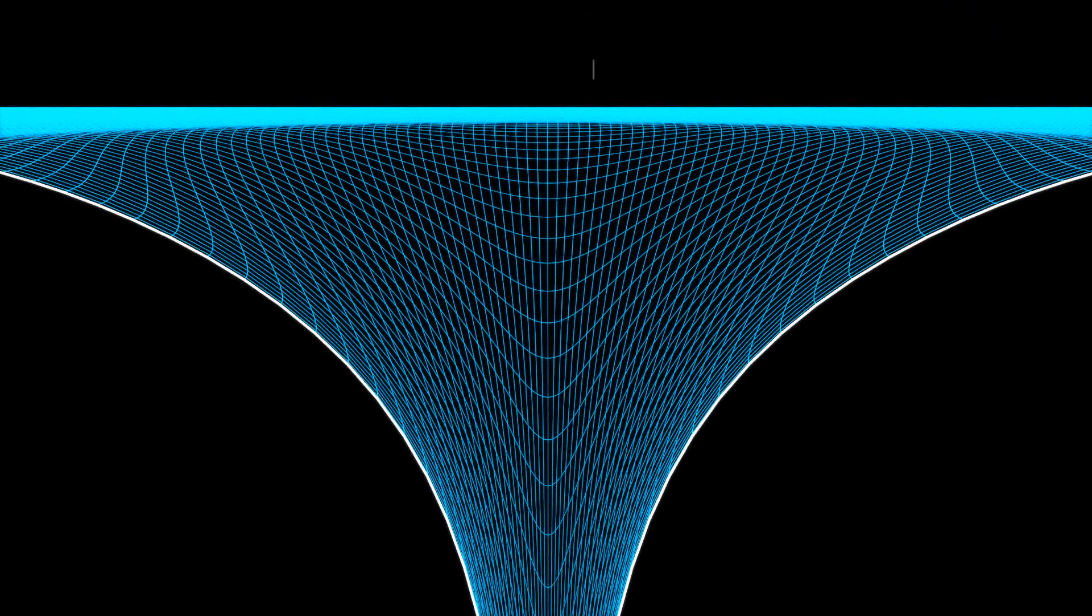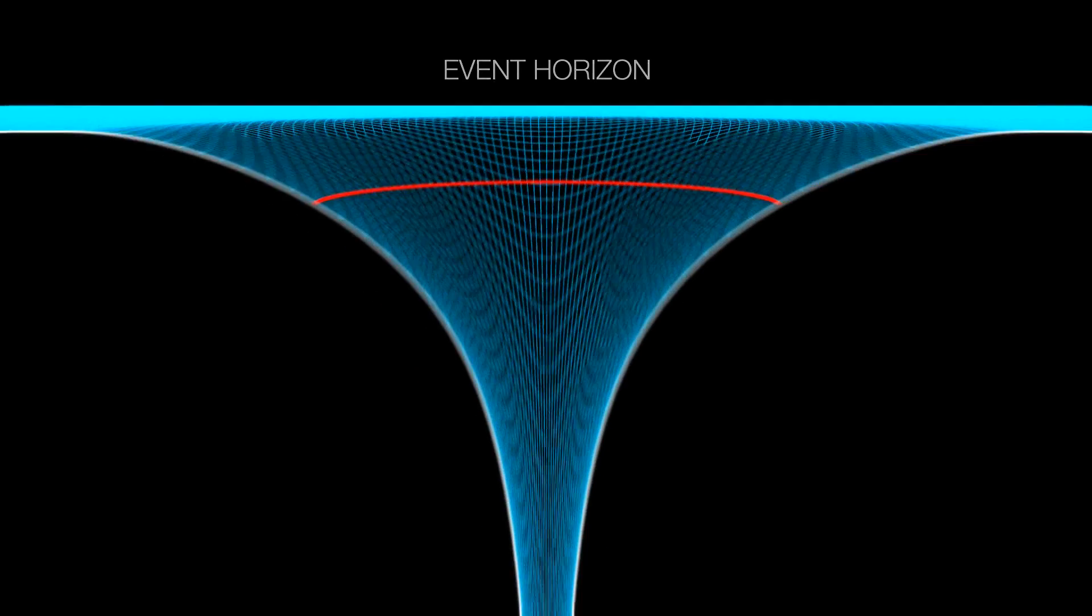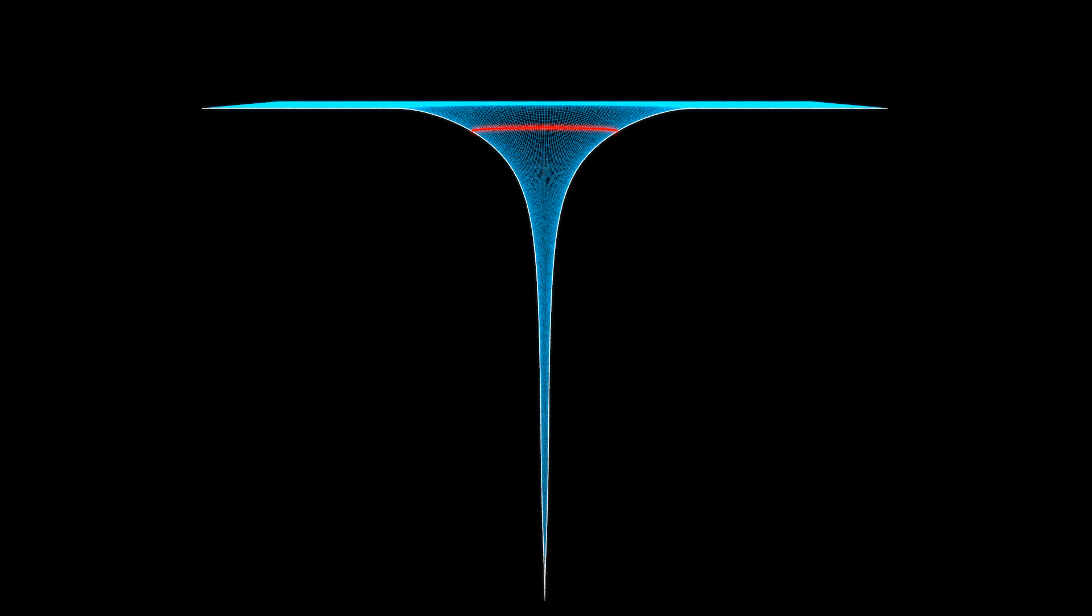The boundary of a black hole is the so-called event horizon. It is said that nothing that enters this region can ever escape from the black hole. Not even light. Hence the name, black hole.